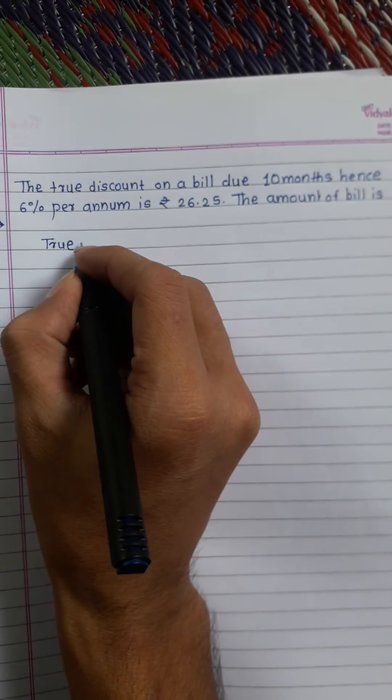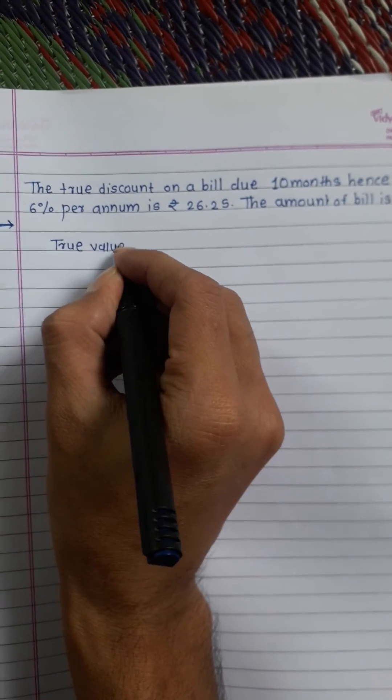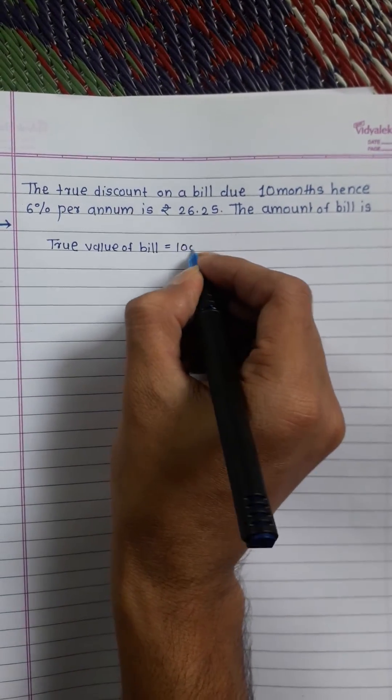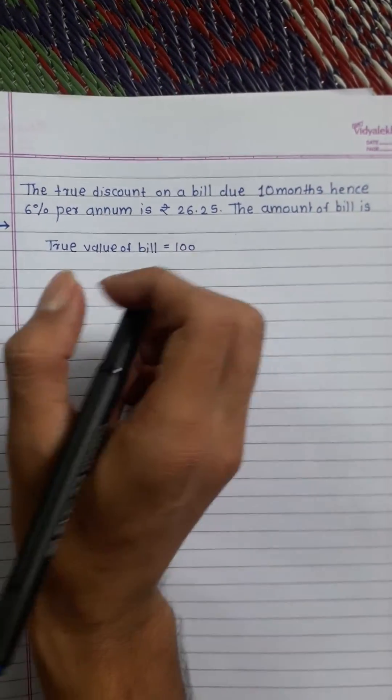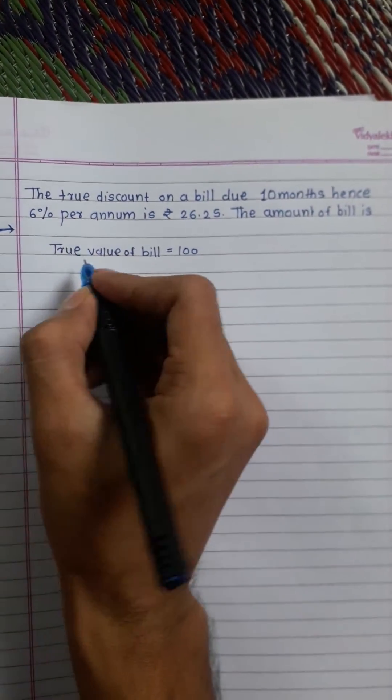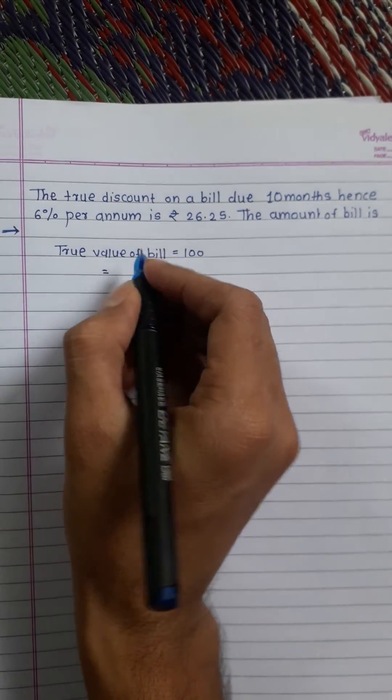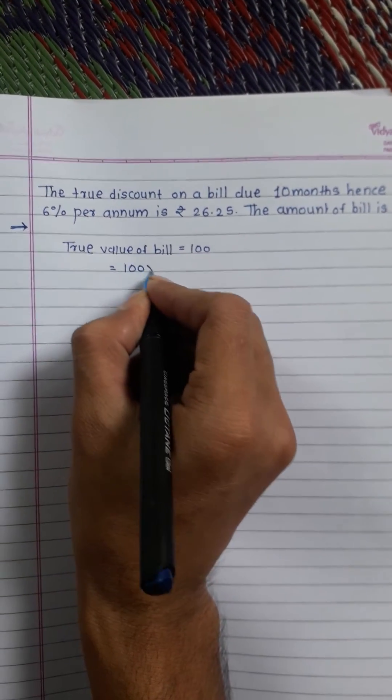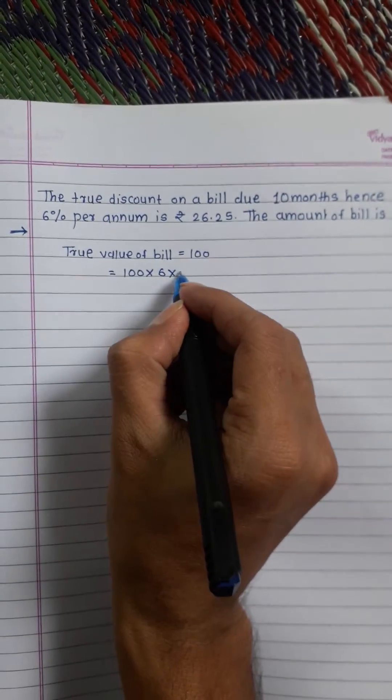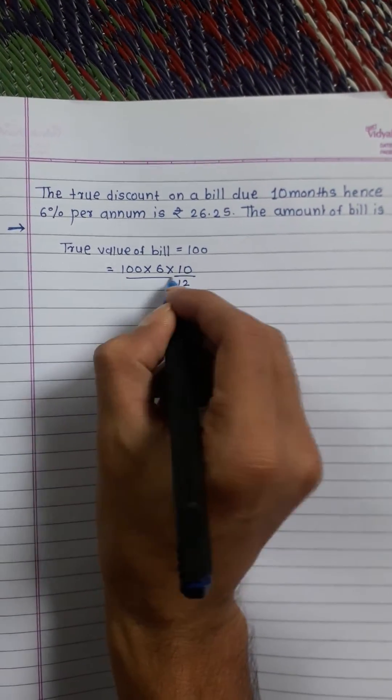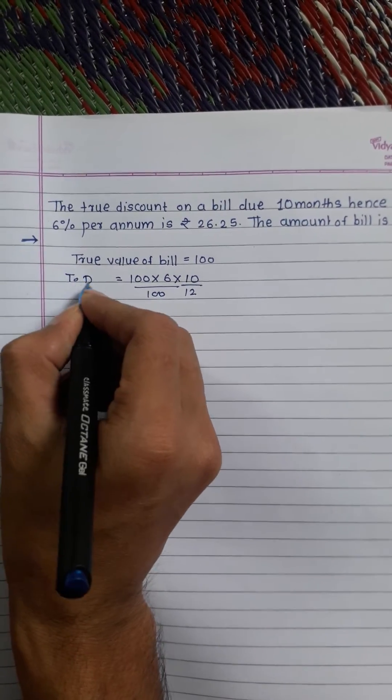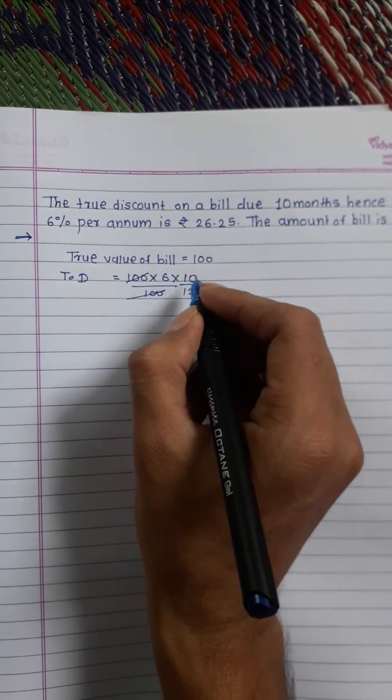Now what you will do here, there's 6% per annum is the rate, then suppose 100 rupees to 6 into, this is per annum but it's 10 months is given, so 10 by 12 divided by 100. This is known as true discount.